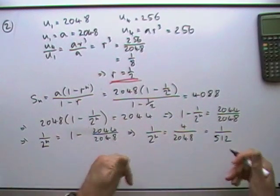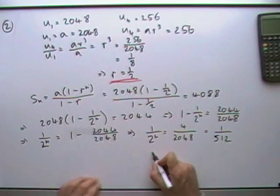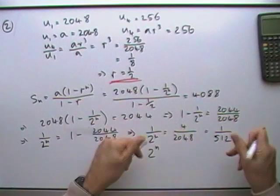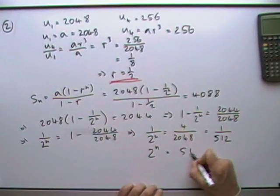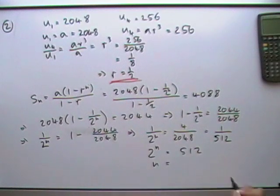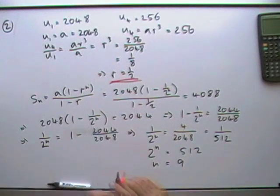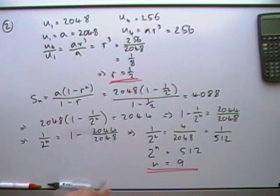Flip that over. That means 2^N equals 512, and that's a power you should know - that's 2^9. So the answer is N equals 9. 2^10 is approximately 1000, and 512 is half of that, confirming it's 2^9.